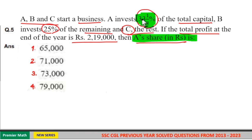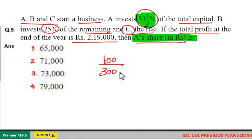So 100 by 3 percentage means 100 by 300 of the total capital, which means 300 is the total capital and 100 is A's share.